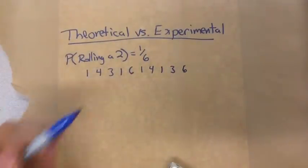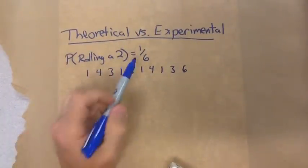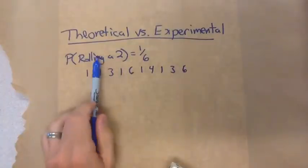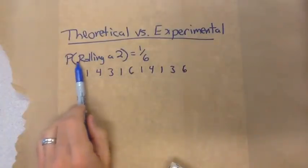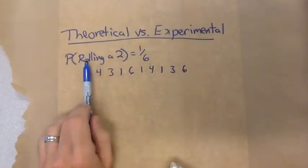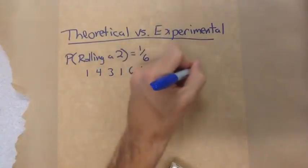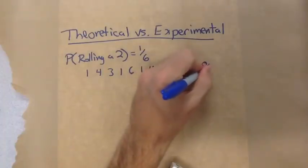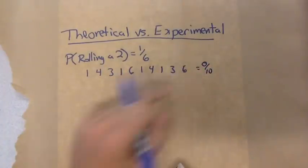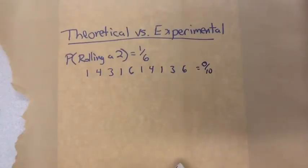That doesn't mean it's changed what the probability would be — it's still one in six. But it shows the difference between this theoretical probability of one in six and the experimental turning out to be zero out of ten. That doesn't mean the probability is zero; it's just that in this experiment maybe I haven't done enough.